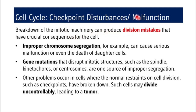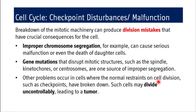The breakdown of the mitotic machinery can produce division mistakes with crucial consequences. Improper chromosome segregation can cause serious malfunction or even death of daughter cells. Gene mutations that disrupt mitotic structures — such as spindle, kinetochores, or centrosomes — are one source of improper segregation. Additionally, when normal restraints on cell division such as checkpoints break down, cells may divide uncontrollably, leading to tumor formation.